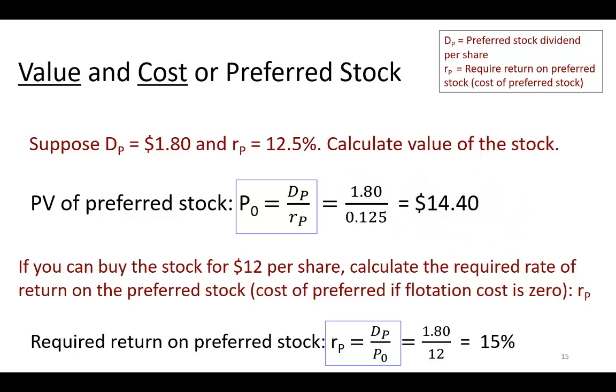Likewise, if we want to find the required rate of return on this preferred stock, we simply have to solve for r_p algebraically. It's going to be the dividend divided by price. And this required rate of return on preferred stock automatically becomes the cost of preferred stock.